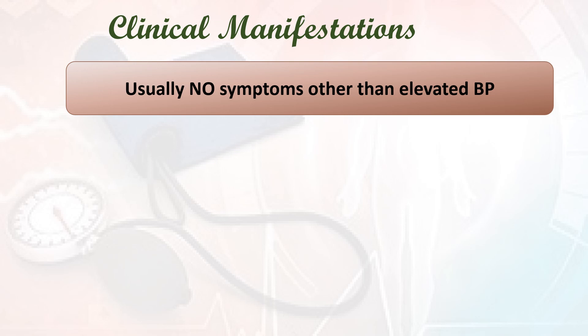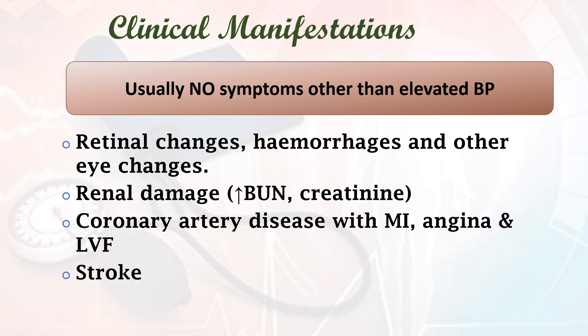What are the clinical manifestations of hypertension? Usually it is asymptomatic other than elevated blood pressure. Other clinical features include retinal changes, hemorrhages and other eye changes, renal damage with increased blood urea nitrogen and creatinine levels, coronary artery disease with myocardial infarction, angina, left ventricular failure, and stroke or transient ischemic attack or CVA.